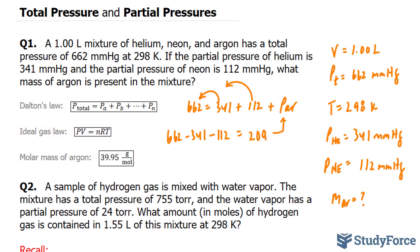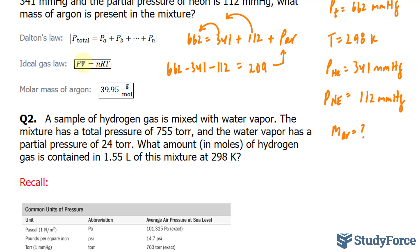Now I can use the ideal gas law formula, which is shown right here. And I can write down the pressure of Argon, which is 209, but instead of writing 209, which is in mmHg, I need to convert it into atmosphere. So I'll take 209 mmHg and multiply it by 1 atmosphere over 760, because that's the conversion ratio.